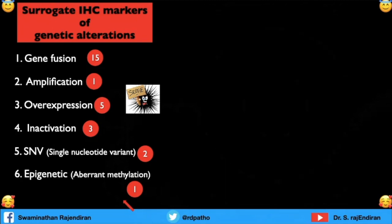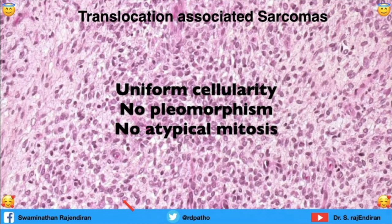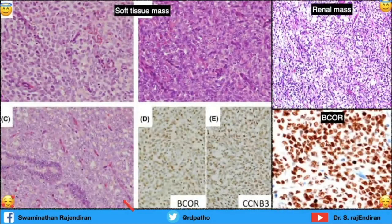There are 15 specific gene fusion markers. These gene fusion markers are mainly associated with translocation-associated sarcomas. The key concept to remember is that most of them show uniform cellularity, no pleomorphism, and no atypical mitosis. This cartoon shows all members of the translocation-associated small round cell sarcomas — these are all H&E small blue cell tumors.